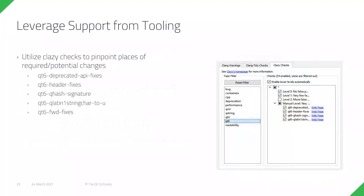We have support in Qt Creator to help with migration. You can enable Clazy checks in your Qt5.15 version, which will show you what features won't be supported in Qt6 so you can address those while still on Qt5.15. Remove those warnings first, and then the migration to Qt6 should be quite straightforward.